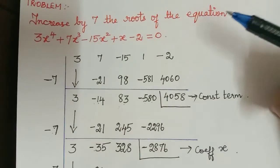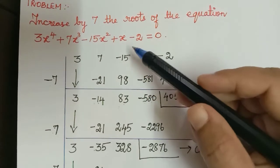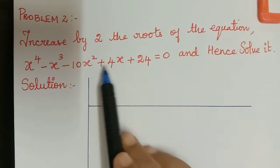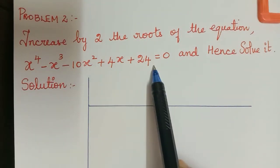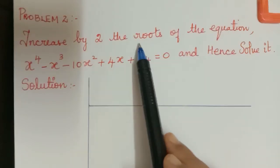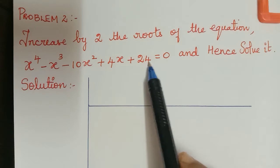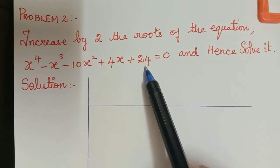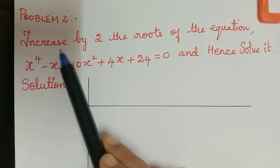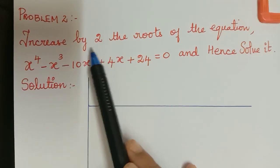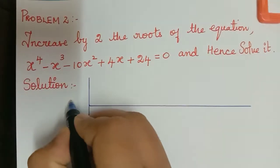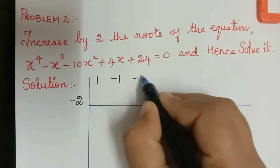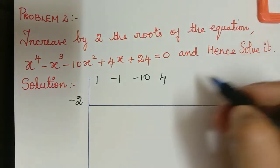So this is the method for the problem. Hope you have understood. We will see one more problem of the same type. The next question asks us to increase by 2 the roots of a given equation and hence solve it. Increasing the roots by 2 is the same as diminishing the roots by negative 2. We write the coefficients: 1, negative 1, negative 10, 4, and 24.